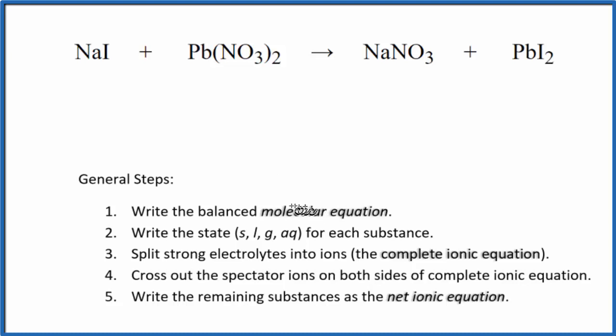First thing we need to do for net ionic equations, we have to balance the molecular equation. As we look at it, there are two nitrate ions here and only one here. So I'm just going to put a 2 in front of the sodium nitrate. That balances the nitrates. Now I have two sodium atoms. Put a 2 here, they're balanced.